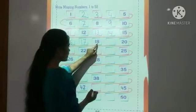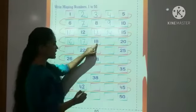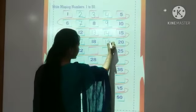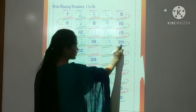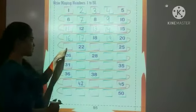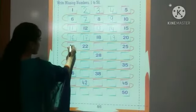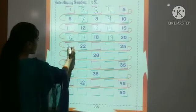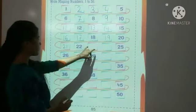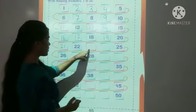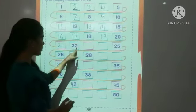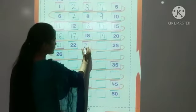After 18, which number comes? 1 ten and 6 — 16? No, 1 ten and 9 — 19. Then 2 tens — 20. Then 2 tens and 1 — 21. Then 2 tens and 2 — 22. Then again 2 boxes are empty — which numbers will come here? 2 tens and 3, 2 tens and 4.